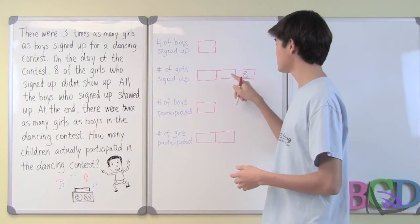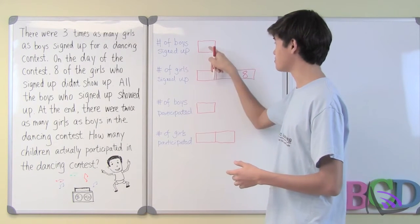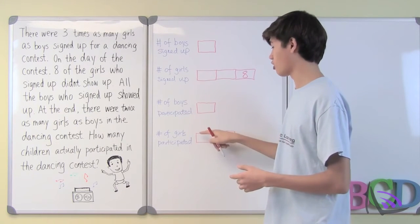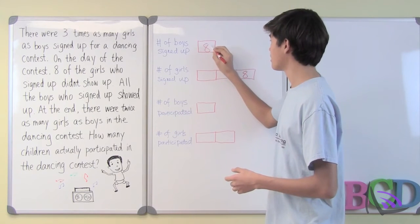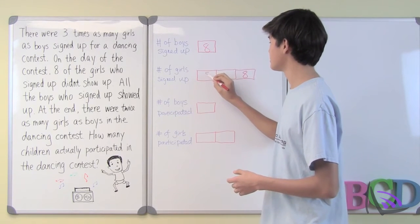And since each one of these bars are equivalent, that means each bar is eight.